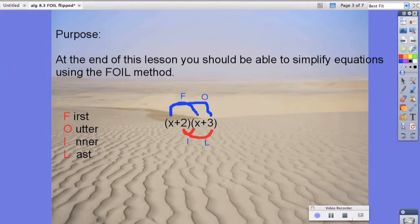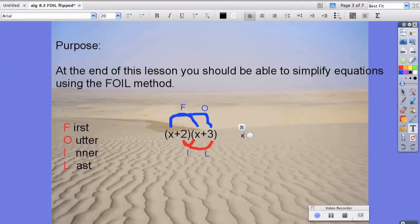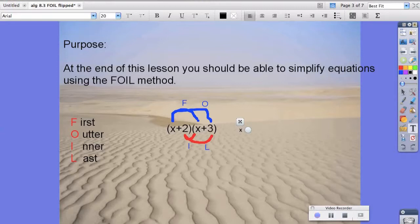So when we do these, we're multiplying. So it's x times x, which is x squared. So we have x squared plus the outer is 3, or x times 3, or 3x.